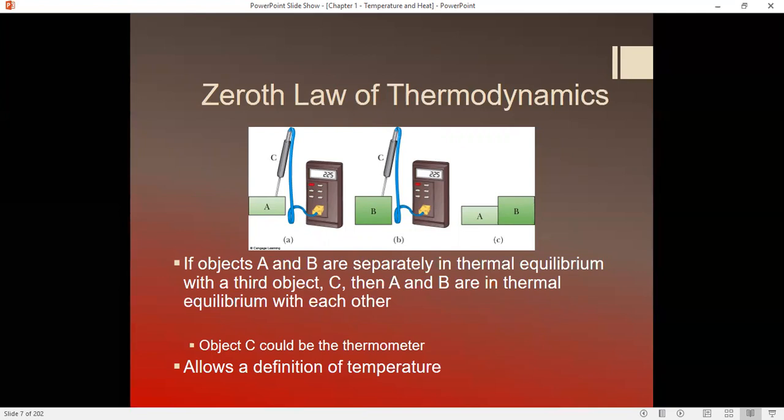So it allows us to really determine what the temperature of an object is, because we can use some object C whose thermal properties are well understood and use that as a thermometer. If we have that in thermal equilibrium with A and then we find out that it's also in thermal equilibrium with B with the same physical properties, that thermometer tells us that both are the same temperature.